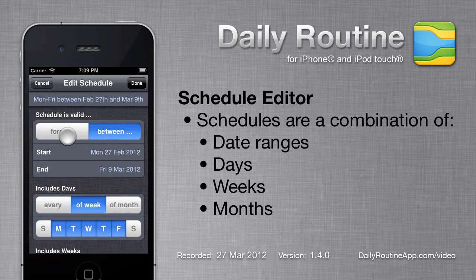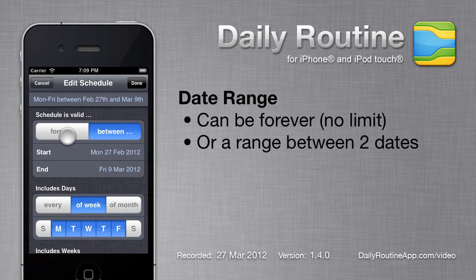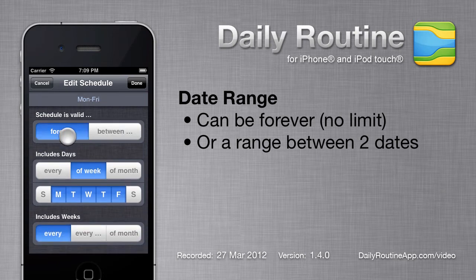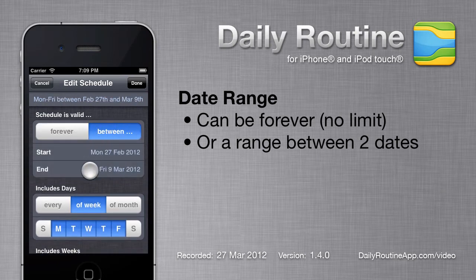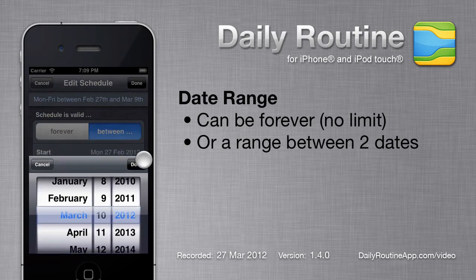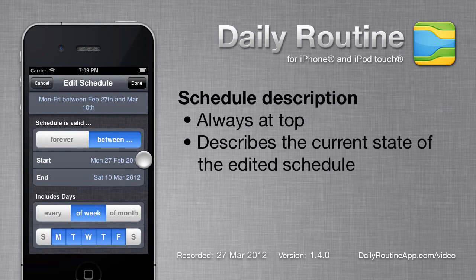These four factors all work together. At the moment, our schedule covers Monday to Friday between two specific dates. I could remove this date restriction by tapping the Forever button, or I could edit the dates. As we change the schedule, notice that the description at the top is changing too.